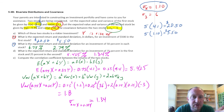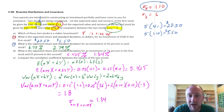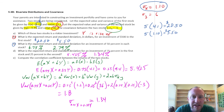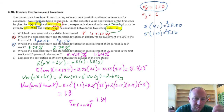So we have lower return and lower risk — that makes sense. We're more heavily invested in the safer asset, so no surprises here.